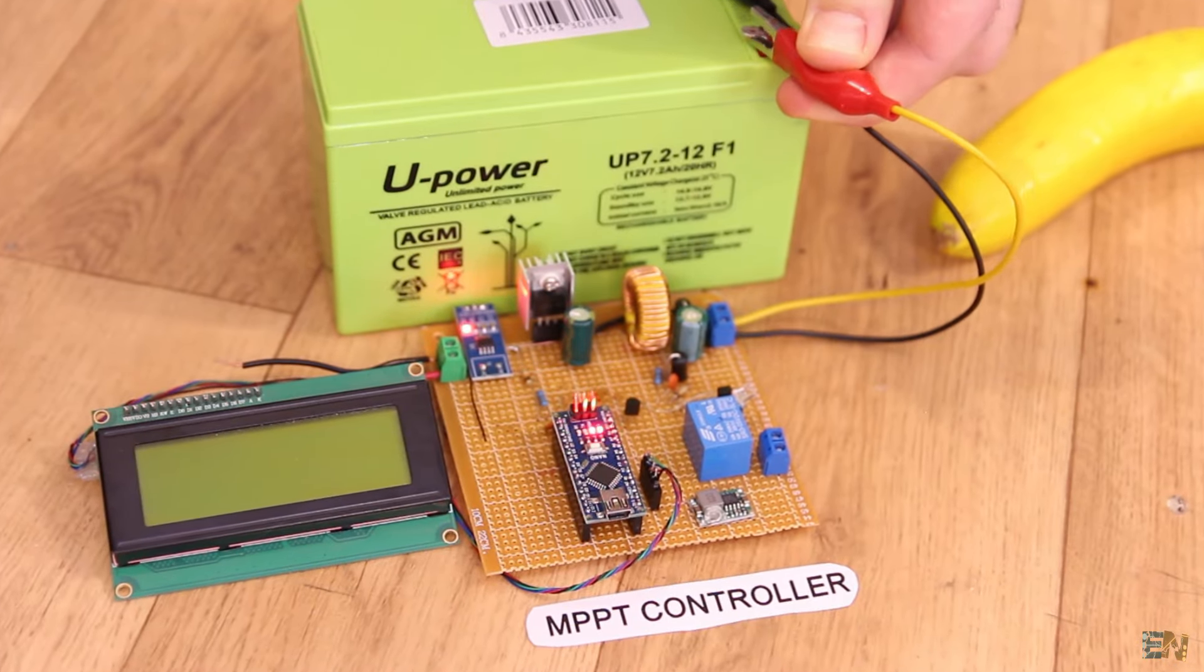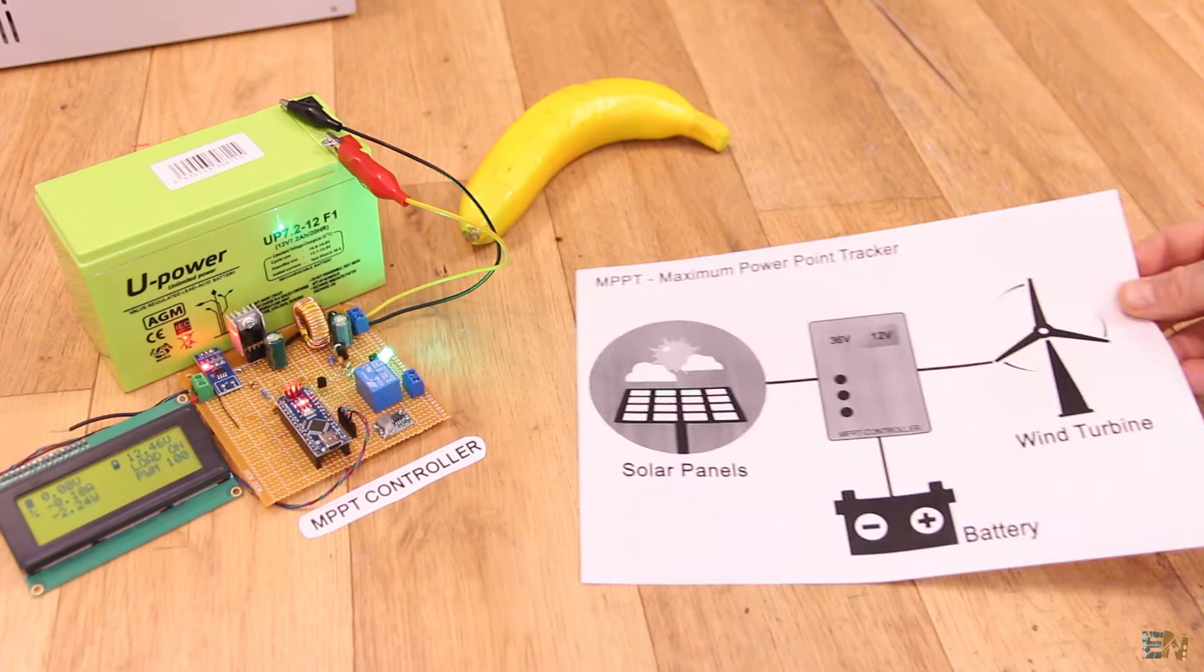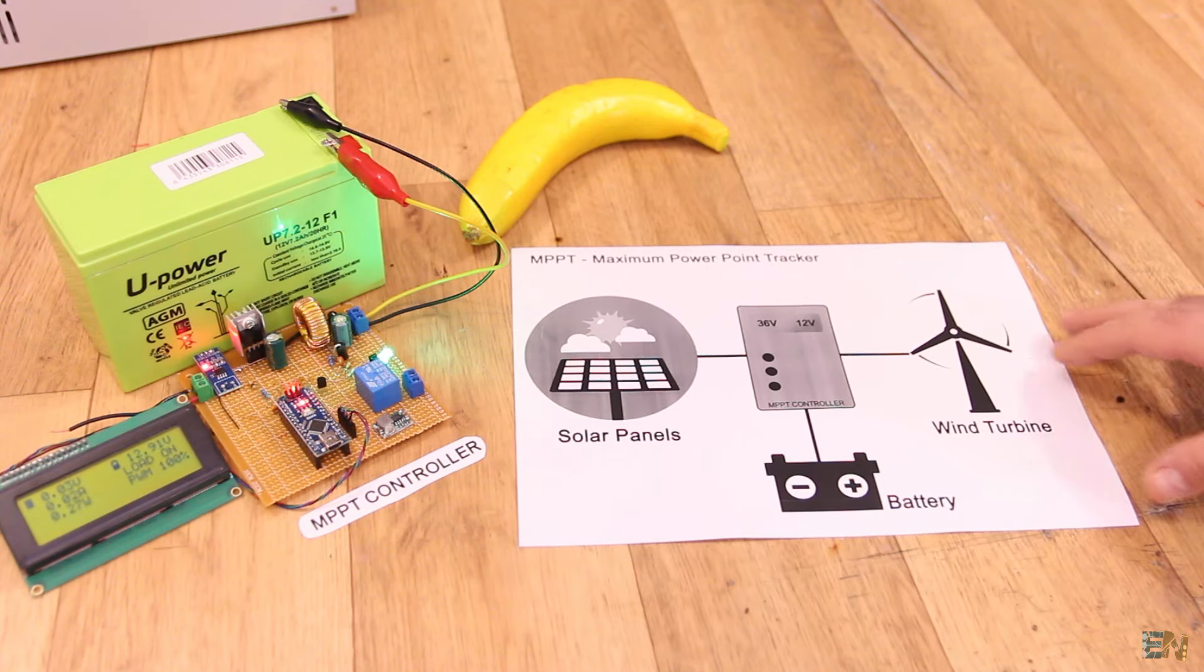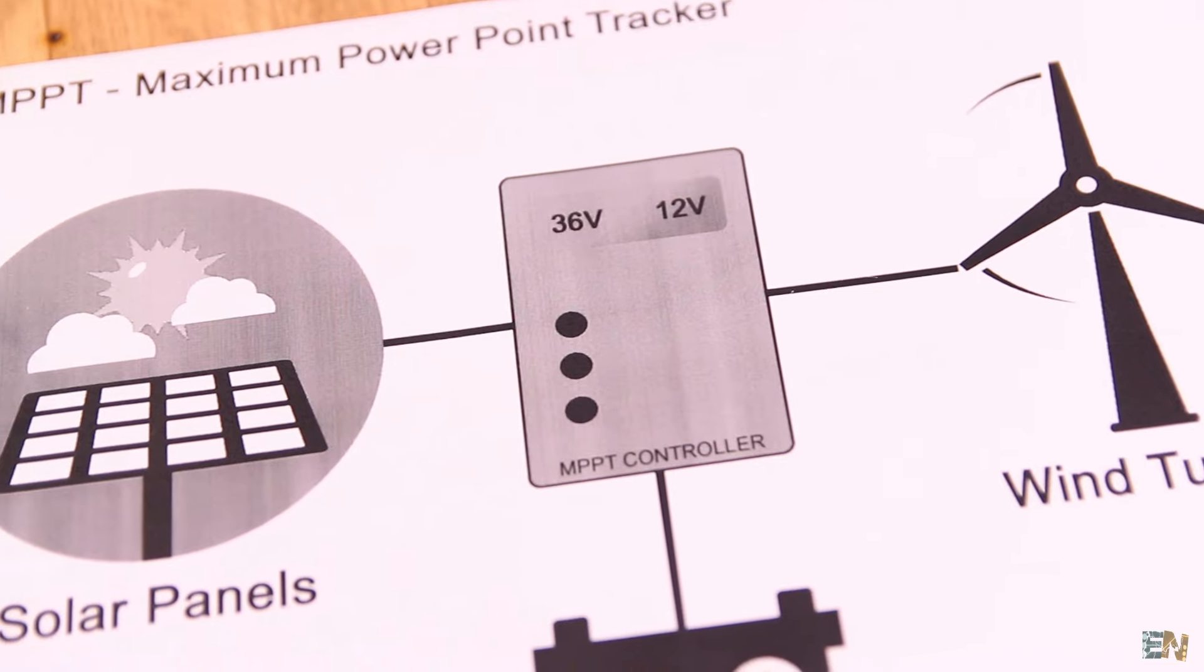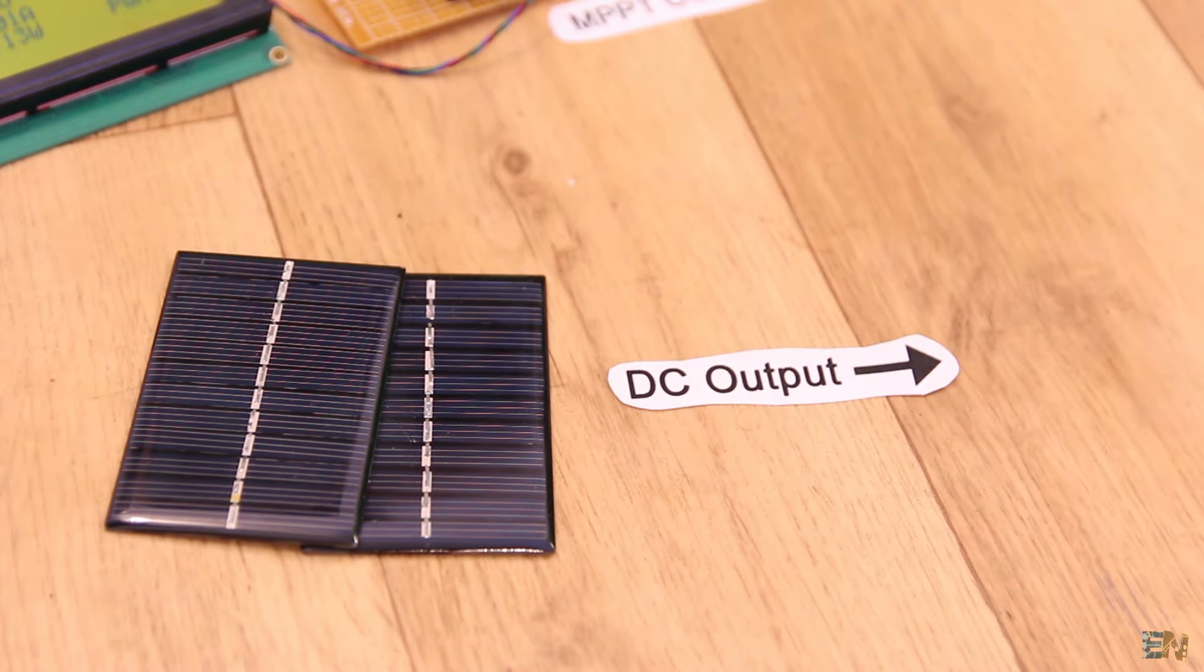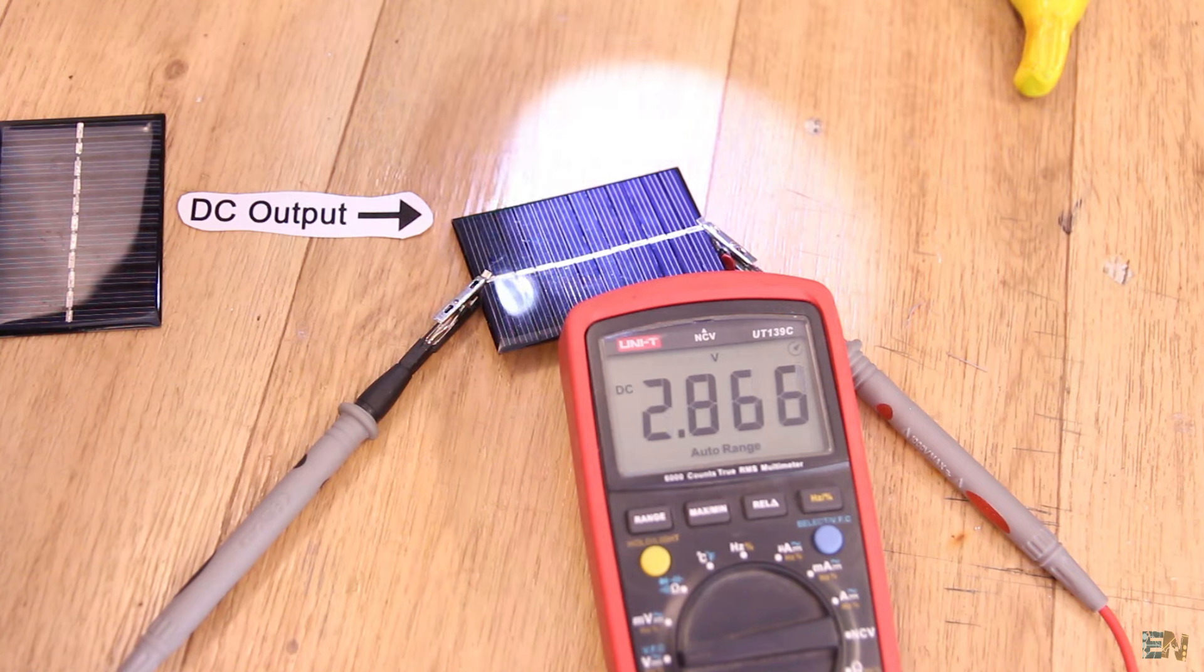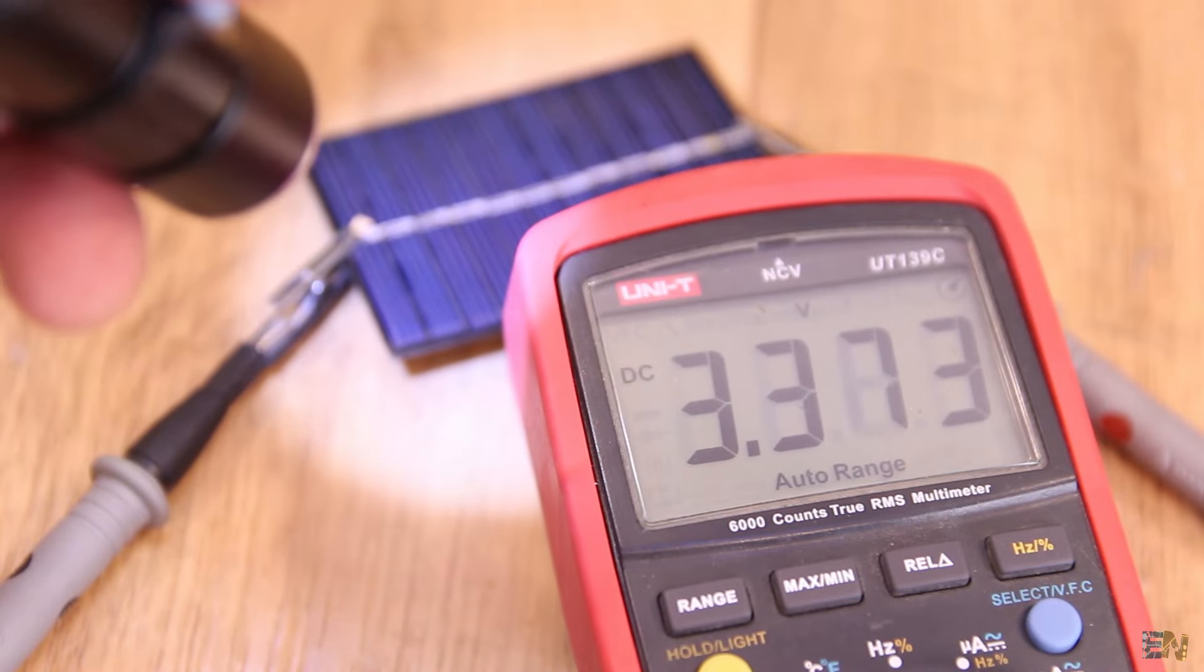So now let's see what is this MPPT controller. The MPPT technique is commonly used with wind turbine and solar panel systems to maximize the power extraction under all conditions. Solar panels will give DC output, but this output is not stable. It will depend on the amount of sunlight, the panel power, the temperature and so on.